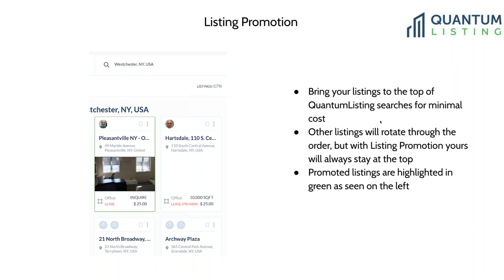The first new on-demand feature is listing promotion, which brings your listings to the top of Quantum Listing searches within our site. It only costs $2.50 a week per listing or $7.50 a month per listing. You can see on the left side of the screen what one of these looks like — they look like any other listing except they have a green band around it indicating it is a promoted listing. If your listing is within a 20-mile radius of where a user is searching, it will show up, so you should get lots of extra views for not a lot of extra money.